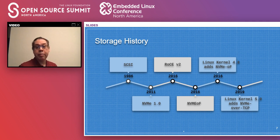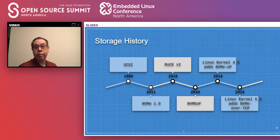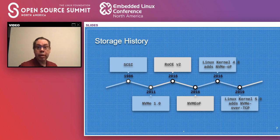Also in 2016, the NVMe over Fabric standard was released — a way to connect to storage devices using NVMe over different media like Ethernet, Fiber Channel, or other fast media. That same year, the Linux kernel added support for NVMe over Fabric. Last year, Linux kernel 5.0 added support for NVMe over TCP, which is the most widely used networking standard, allowing it to work with multiple NIC cards or hardware interfaces.